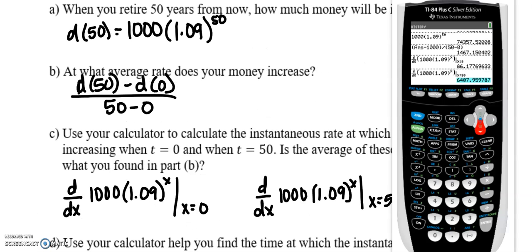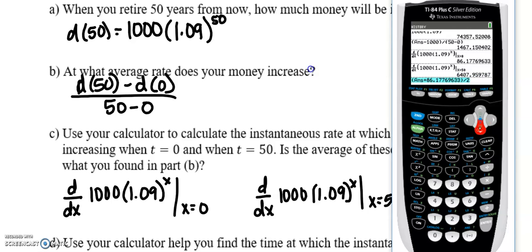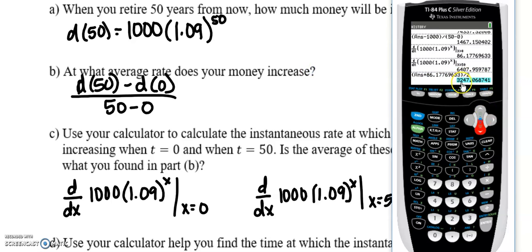All right, I'm just going to show you the answers in my calculator. So for part a, we get $74,357.52. For part b, my average rate of change. Note that my initial amount was $1,000 because that's what I started with. So taking the average rate of change, I get $1,467.15 per year. Then I did my instantaneous rate at 0, my instantaneous rate at 50. And I found the average of those two was $3,200.